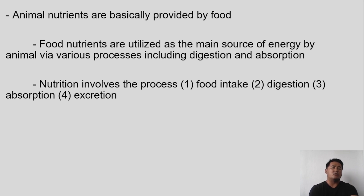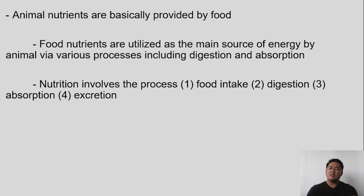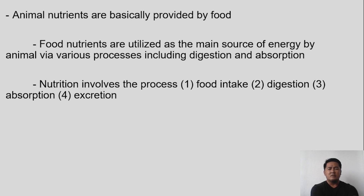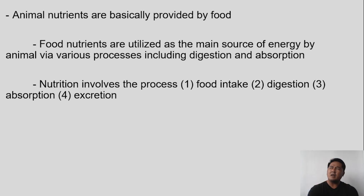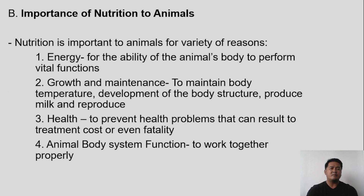What are the processes involved in nutrition? First is food intake — what the animal eats. Next is digestion — the food undergoes processes in the digestive system. Then absorption — the food that was digested has its nutrients extracted and absorbed. Finally, excretion — the removal of waste products after the nutrients have been taken from the food.